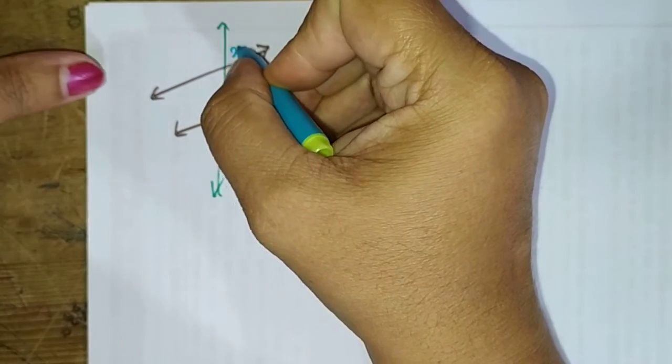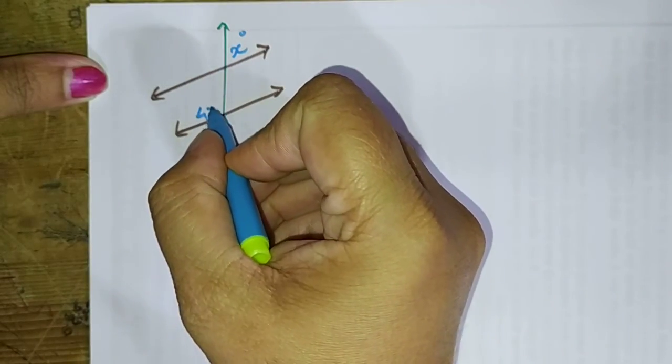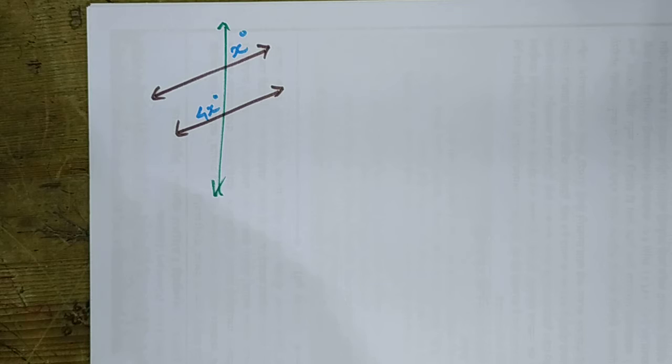Let's say that this is X degrees and this is 4X degrees. And we have to find out all other angles.